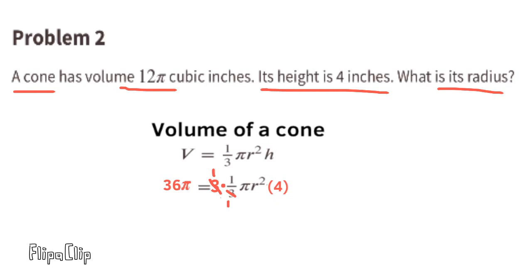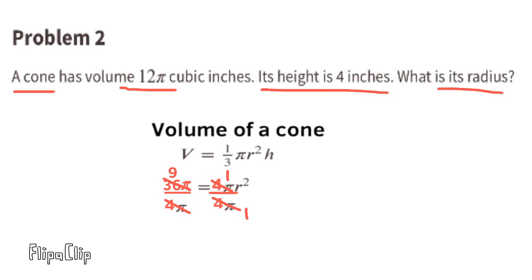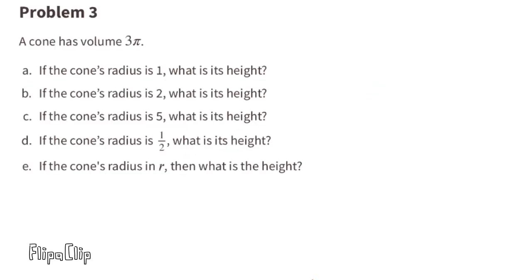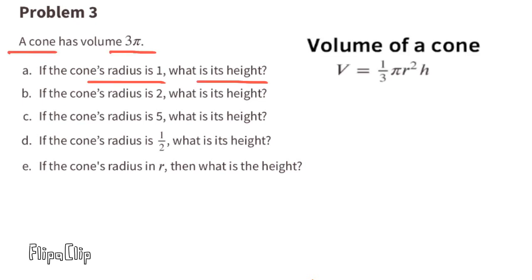And 3 times 1/3 pi is 1 pi. On the right hand side it reads 1 times pi r squared times 4, which is the same as 4 times pi r squared. Dividing both sides by 4 pi gives us 9 equals r squared. Since 3 squared equals 9, r must equal 3. The radius of this cone is 3 inches.